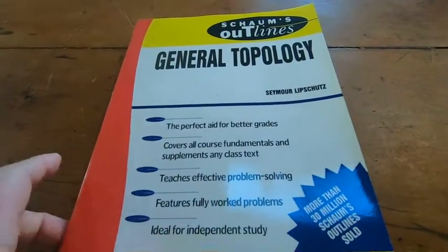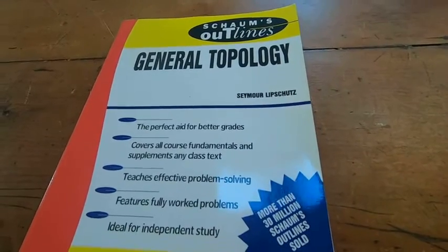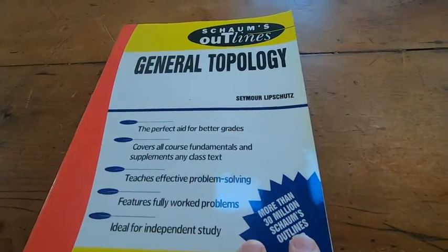So all of these Schaum's outlines are really good books. This is the one on general topology. My feeling is that this one is a little bit better than most of the other Schaum's.